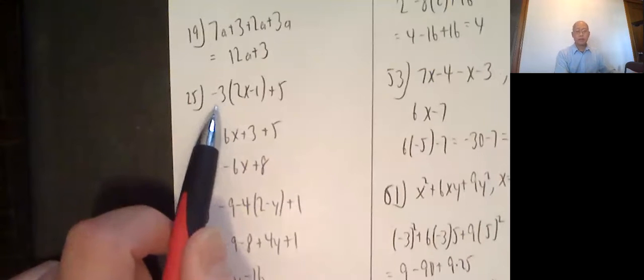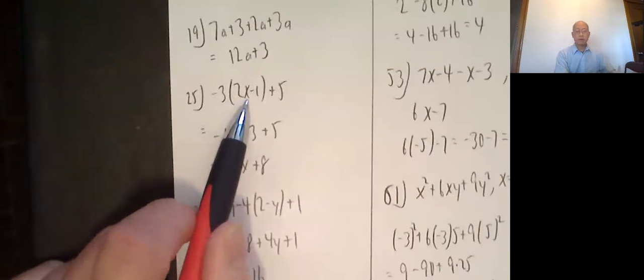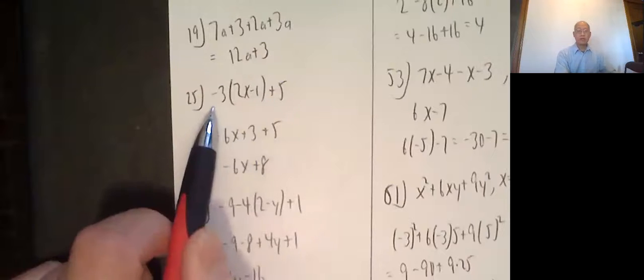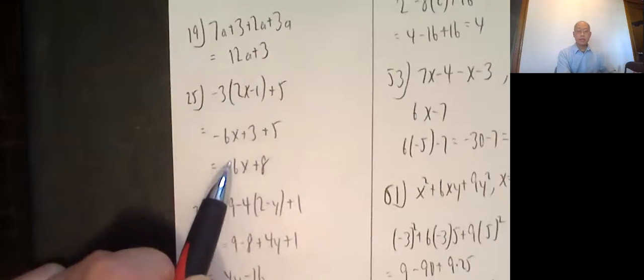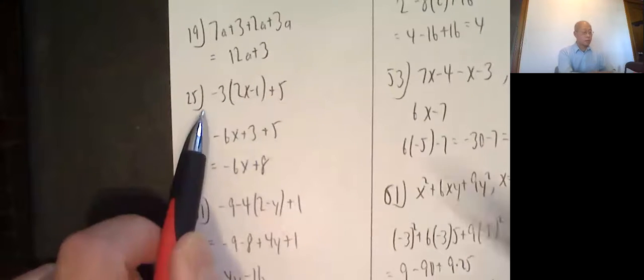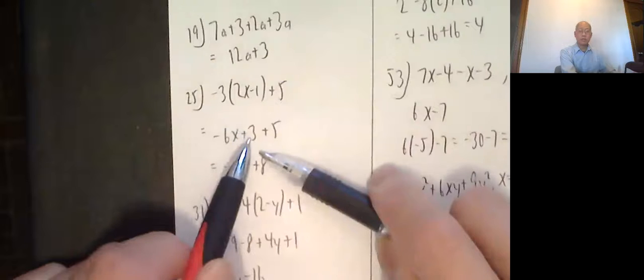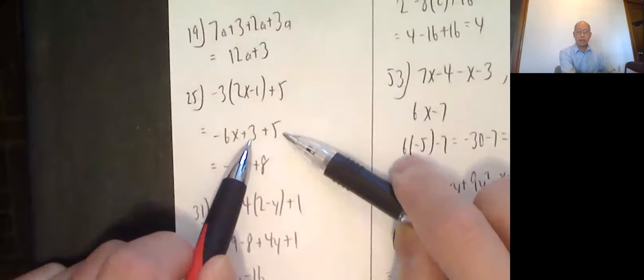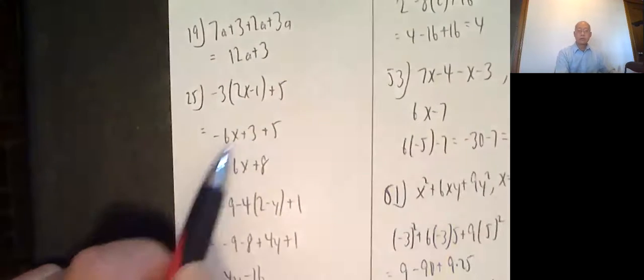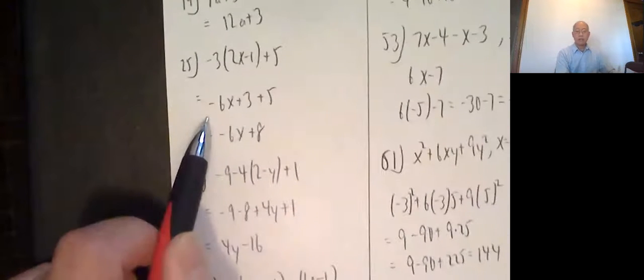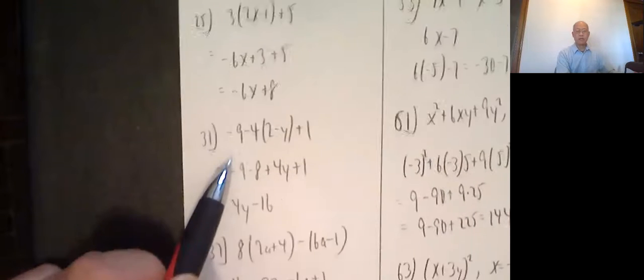25, we use the distributive property. Negative 3 times 2x minus 1 plus 5. So I do negative 3 times 2x, which is negative 6x. Then negative 3 times a negative 1 is a positive 3. Then I add the 5. 3 plus 5 is 8, but I just leave it on the negative 6x. So negative 6x plus 8.